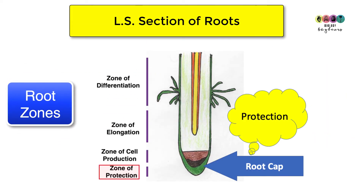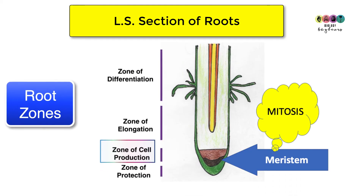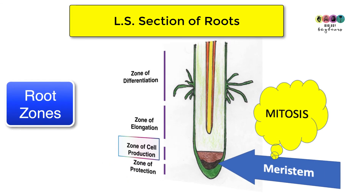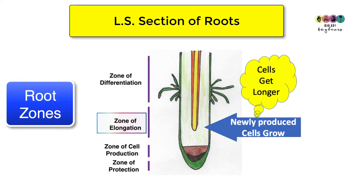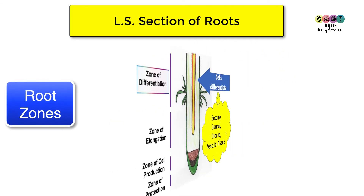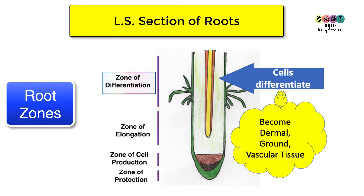The longitudinal section of the root is a really important diagram where you must mark in the four root zones. The first is the zone of protection, where a root cap protects the root as it burrows down into the soil. Next is the zone of cell production, due to the presence of the apical meristem producing new cells by mitosis. Those new cells then enter the zone of elongation, where they simply get longer. Finally, the zone of differentiation is where those elongated cells turn into dermal, ground, or vascular tissue.